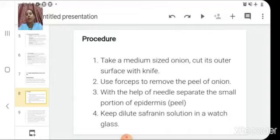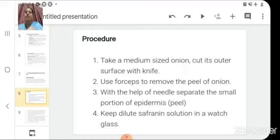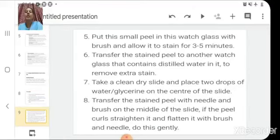So the next steps are accordingly here. With the help of needle, separate the small portion of epidermis and keep it in the dilute safranin solution in a watch glass. Then put this small peel into watch glass with brush and allow it to stain for 3 to 5 minutes. Why with brush?